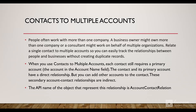When we use Contact to Multiple Accounts, each contact still requires a primary account. When you create a contact there is an Account Name field — whatever account value you populate there will be the primary relationship. When you add related accounts to that contact, all those would be indirect relationships. So the contact and its primary account have a direct relationship, and all other relationships are indirect relationships.